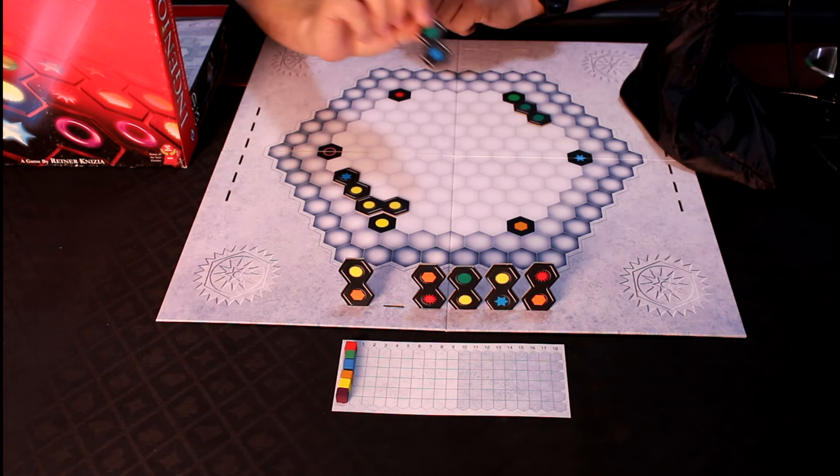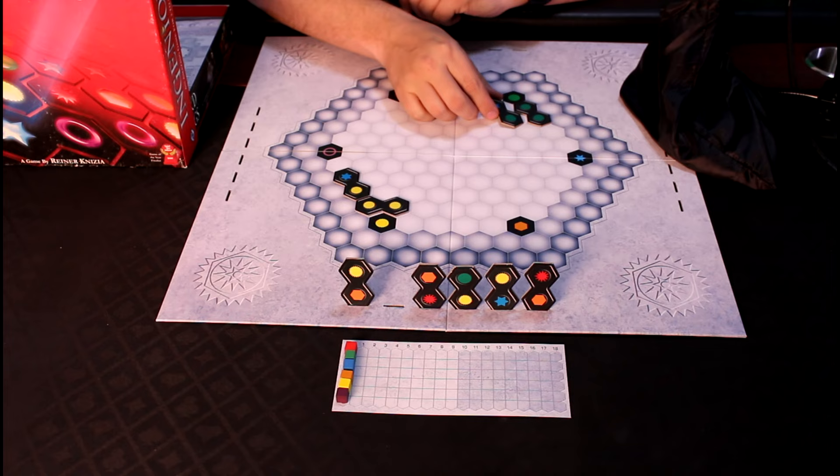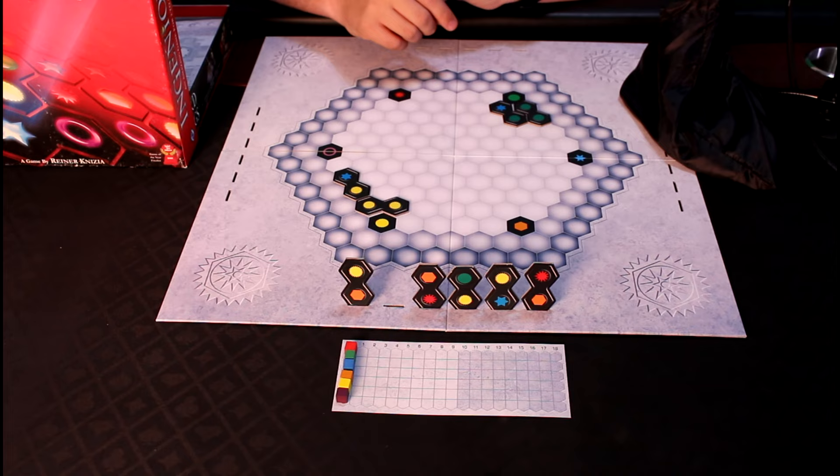So, on a player's turn, you're going to take one of the tiles that are in front of you, and you're going to place it onto the board. The reason you want to do this is you want to group like colors together to score points.